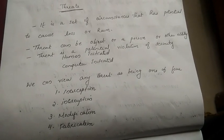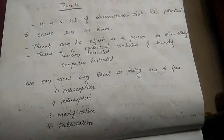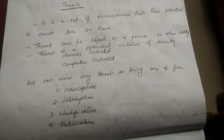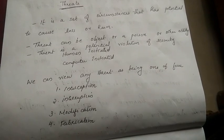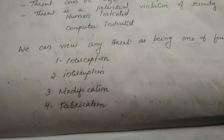We can view any threat as being one of four kinds of Threats. There are four different types of Threats: the 1st one is Interception, the 2nd is Interruption, the 3rd one is Modification, and the 4th one is Fabrication.